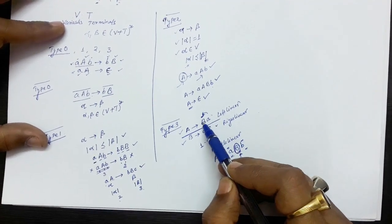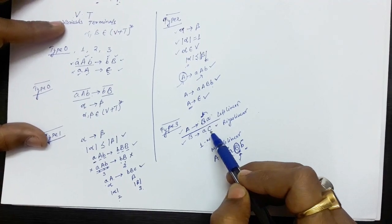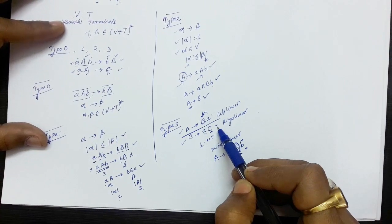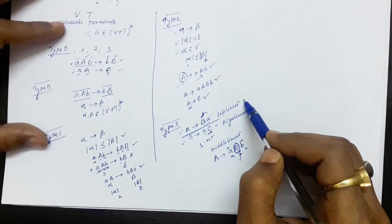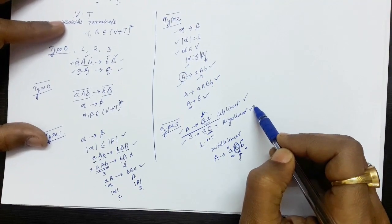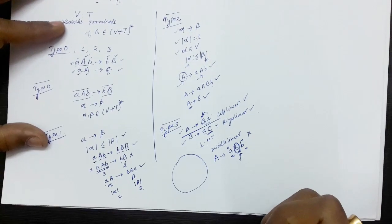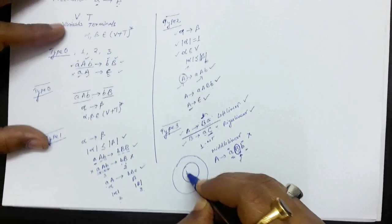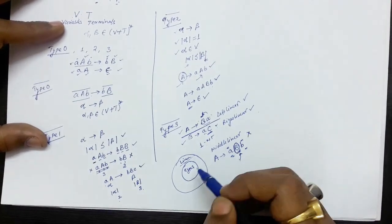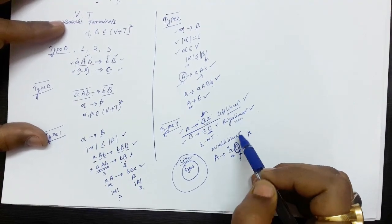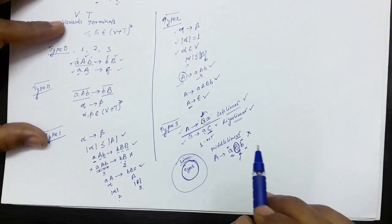In left linear grammar, the non-terminal has no symbol on its left but has a symbol on its right. In right linear grammar, there is a symbol on the left but nothing on the right of the non-terminal. So left linear and right linear are acceptable in type 3, but middle linear is not accepted in type 3. Out of the set of all linear grammars — left linear, right linear, and middle linear — only left linear and right linear can be selected as type 3 grammars.